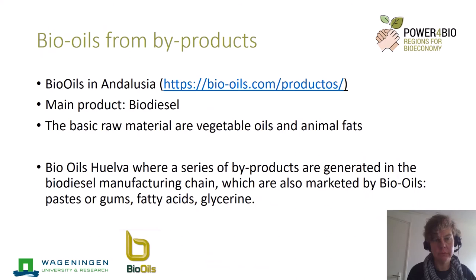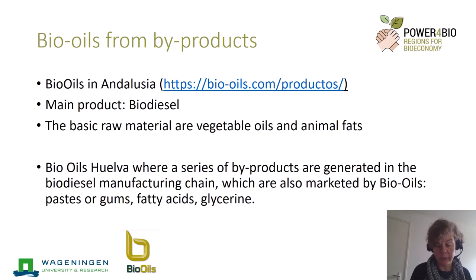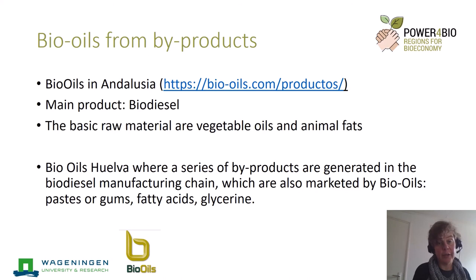Moving away from fermentations, I give you two examples using residues from bio-oil production. The first is from Andalusia — the company is called Bio-oils. Their main product is biodiesel, but they also market other products: pastes and gums that are a side product serving as elements in production of soaps and detergents, fatty acids as a side stream which can be a raw material for the biodiesel esterification process itself, and glycerin containing mainly glycerol which can be used as feed. The unique thing of their process is that the basic raw material for the whole process is vegetable oils and animal fats.